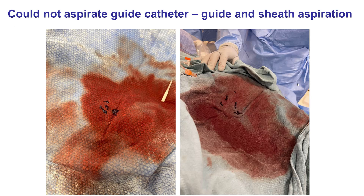We were then trying to engage the left main to provide treatment, but we could not aspirate the guide catheter after it advanced to the aortic root, so we removed the guide catheter. After it was outside the body, we flushed it, and there were large pieces of thrombus retrieved. What most likely happened is that the patient had clot formed in the sheath that was picked up by the guide catheter on its way up to the coronary arteries, plugging it up — confirmed when we aspirated from the guide.